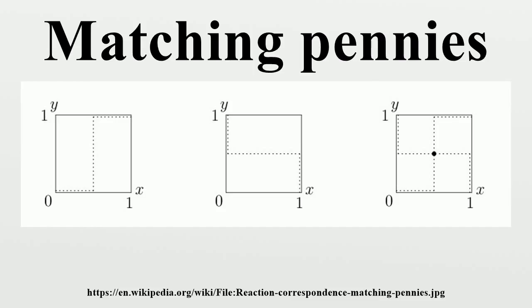The game can be written in a payoff matrix. Each cell of the matrix shows the two players' payoffs, with player A's payoffs listed first.